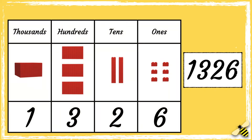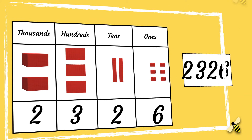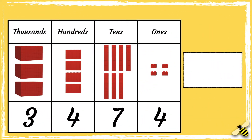Here is a place value grid showing the number 1326. When we add a thousand to a number, we need to look at the thousands column. One thousand becomes two thousands, so the new number is 2326.